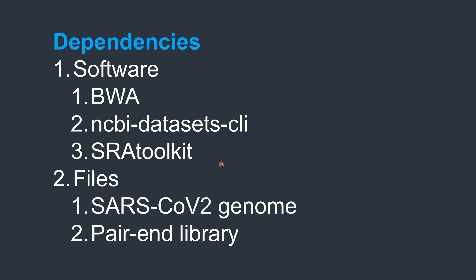We will download the coronavirus genome as well as a paired-end sequencing library that contains reads from the coronavirus genome, because the sample is taken from a coronavirus-infected individual. Let's start downloading the dependent software and the dataset to perform BWA alignment.